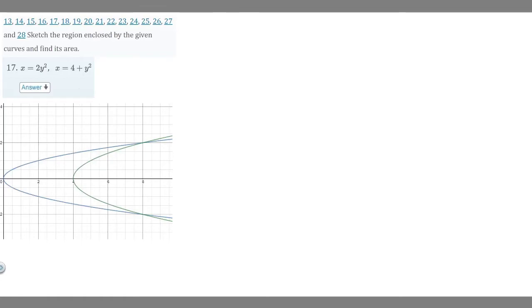In this problem, we're told to sketch the region enclosed by the given curves and find its area. This is number 17, and we're given two functions: x = 2y² and x = 4 + y². I graphed it here on Desmos, and you can see the area I'm shading in.